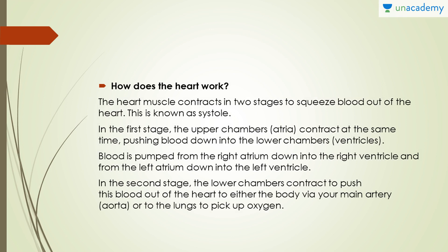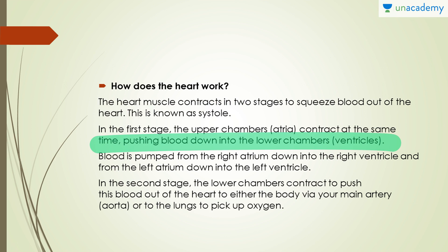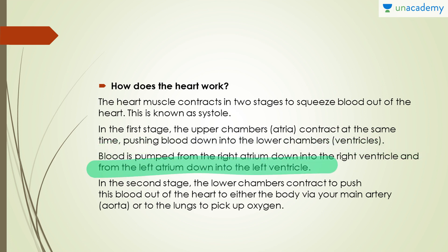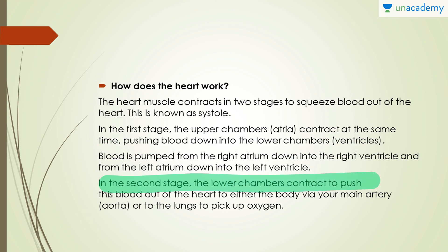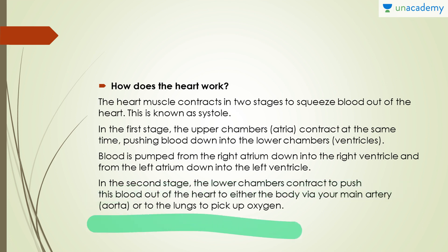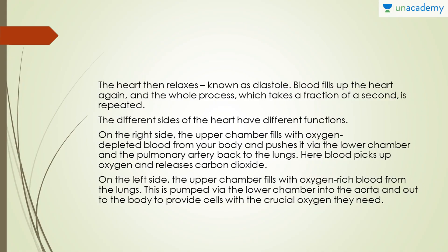How does the heart work? The heart muscle contracts in two states. The first is systole: the upper chambers, or atria, contract at the same time, pushing blood down into the lower chambers, the ventricles. Blood is pumped from the right atrium to the right ventricle, and from the left atrium to the left ventricle. In the second stage, the lower chambers contract and push blood out to either the body via the aorta, or to the lungs to pick up oxygen. The heart then relaxes — known as diastole — blood fills the heart again, and the whole process, which takes a fraction of a second, is repeated.